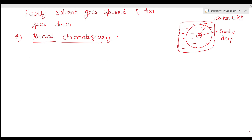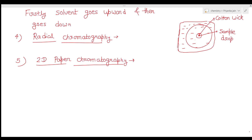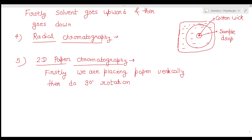The fifth and last technique is 2D paper chromatography. In this method, we first place the paper vertically so that the components separate out as dots. Then we rotate the paper by 90 degrees and run the chromatography again, causing further separation. So separation takes place two times in two different directions.